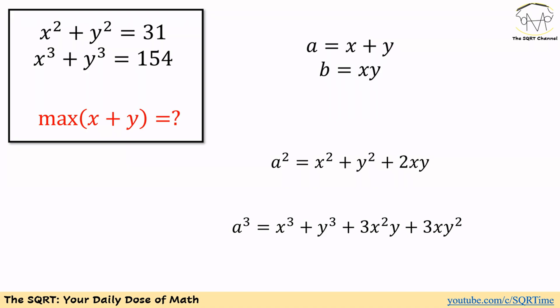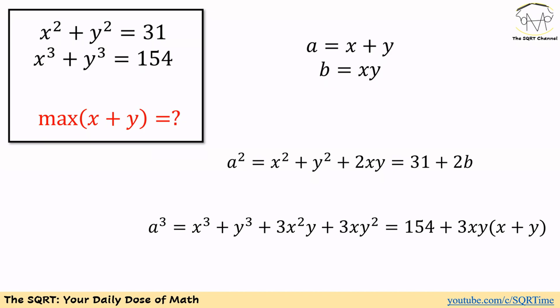Let's start with that. Since the problem asked for x plus y, we are going to use a for x plus y and b for xy. Now we are going to write a squared and a cubed. Here a squared is going to be x squared plus y squared plus two times xy. On the other hand, a cubed is going to be x cubed plus y cubed plus three times x squared y plus three times xy squared.